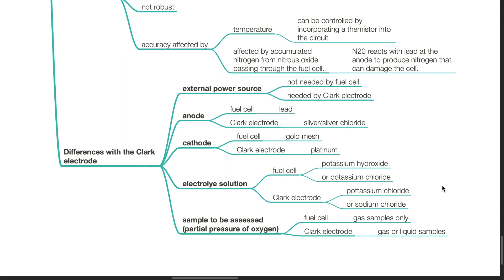Comparing the fuel cell with the Clark electrode: the fuel cell requires no external power source, whereas the Clark electrode does. The anode in the fuel cell is made of lead; in the Clark electrode, it is silver-silver chloride. The cathode in the fuel cell is a gold mesh; in the Clark electrode, it is platinum. The electrolyte in the fuel cell is potassium hydroxide or potassium chloride; in the Clark electrode, it is potassium chloride or sodium chloride. The fuel cell assesses only gas samples, whereas the Clark electrode can assess both gas and liquid samples.